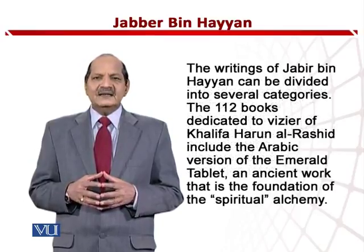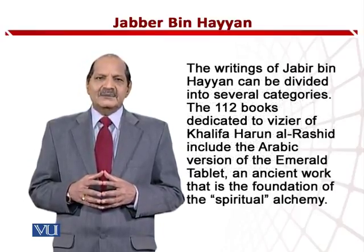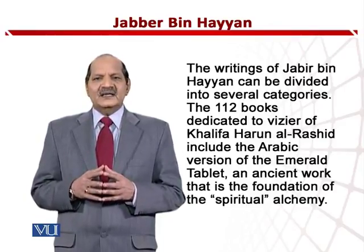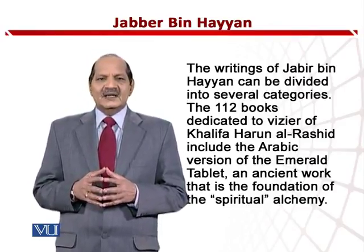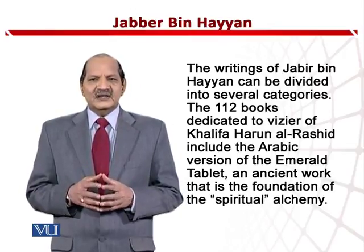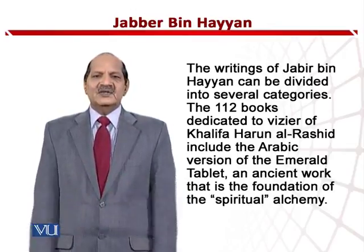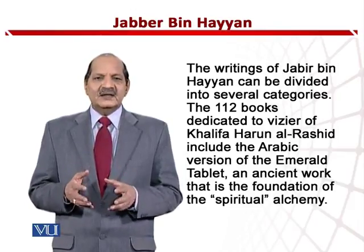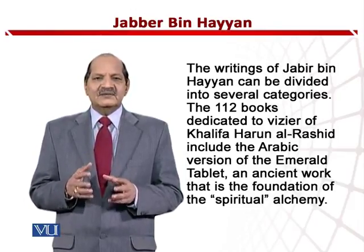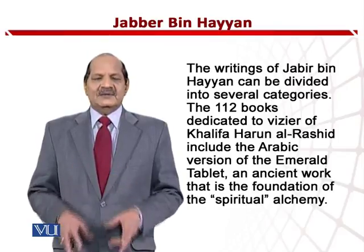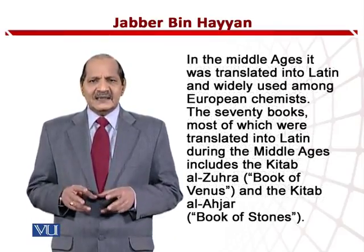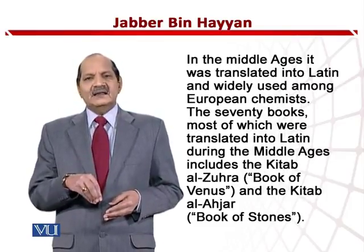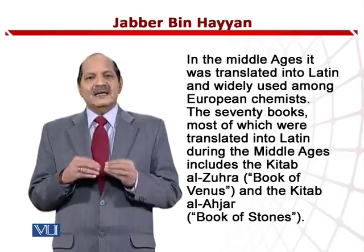The writings of Jabir bin Hayyan can be divided into several categories. 112 books dedicated to the vizier of Khalifa Harun Rashid include the Arabic version of the Emerald Tablet, an ancient work that is the foundation of spiritual alchemy. In the Middle Ages, it was translated into Latin and widely used among European chemists.